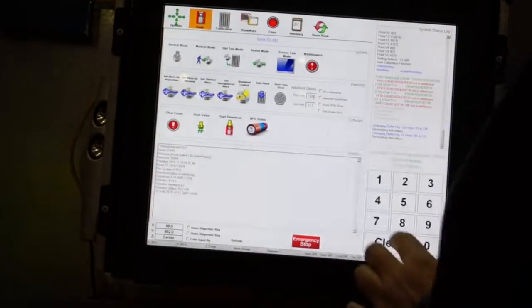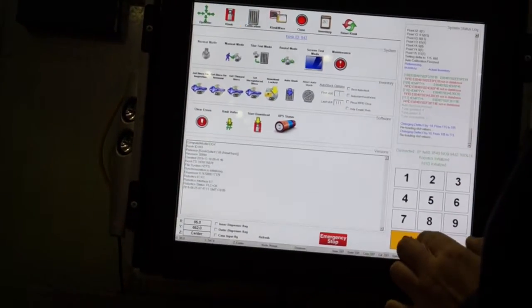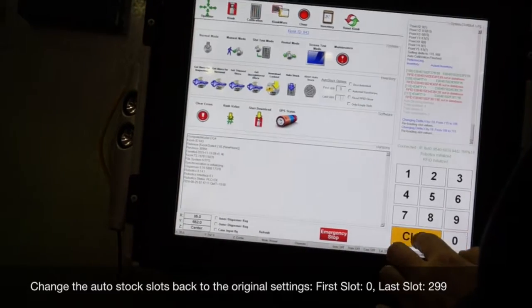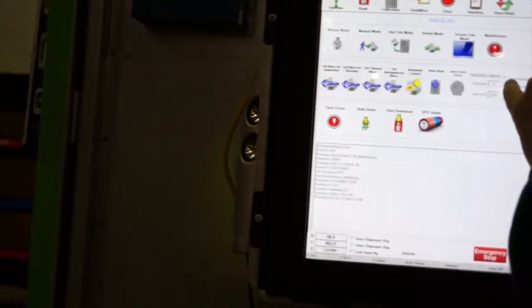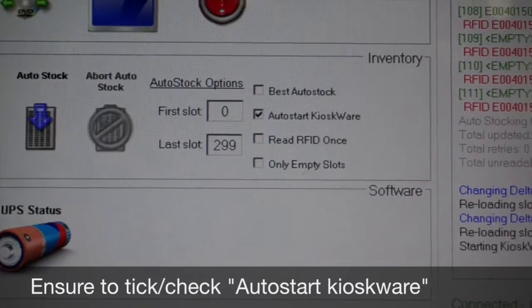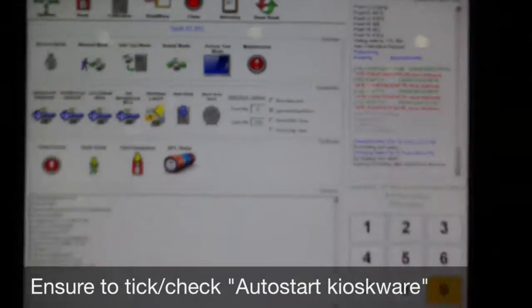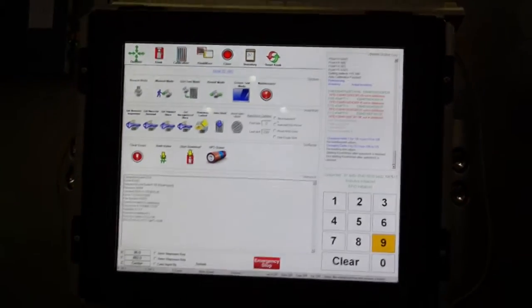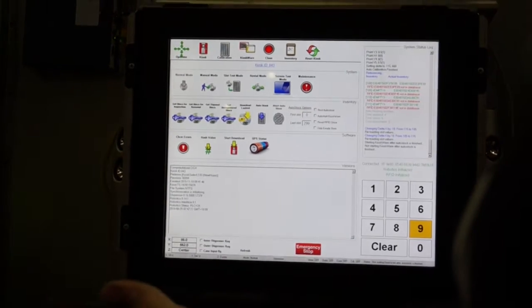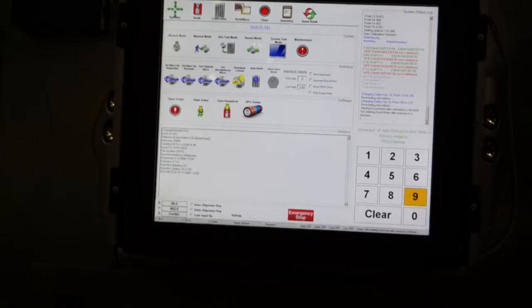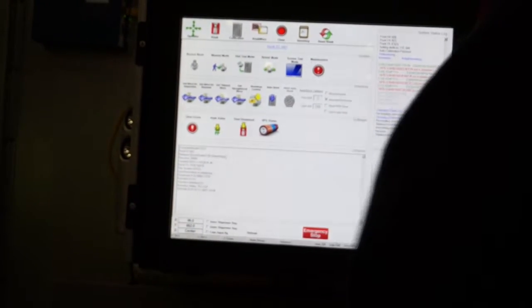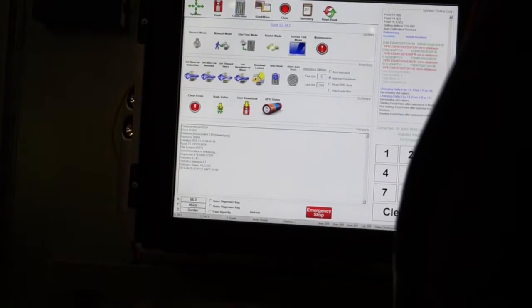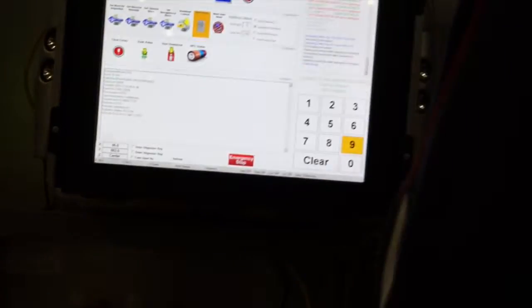All right, so we're going to change these back to the normal settings, which is zero. Tick them all. Now we must make sure that this auto-start kioskware is checked. What that does is, once that's finished stock-taking by itself, it's going to load the customer screen so that people can start using the machine. What we don't want is that unchecked, and so what it does is it finishes its stock take and it just sits here doing nothing, which is bad because no one can use it. It'll be a call out. So we're just going to make sure that start kioskware after auto-stock is checked. It's in your steps.